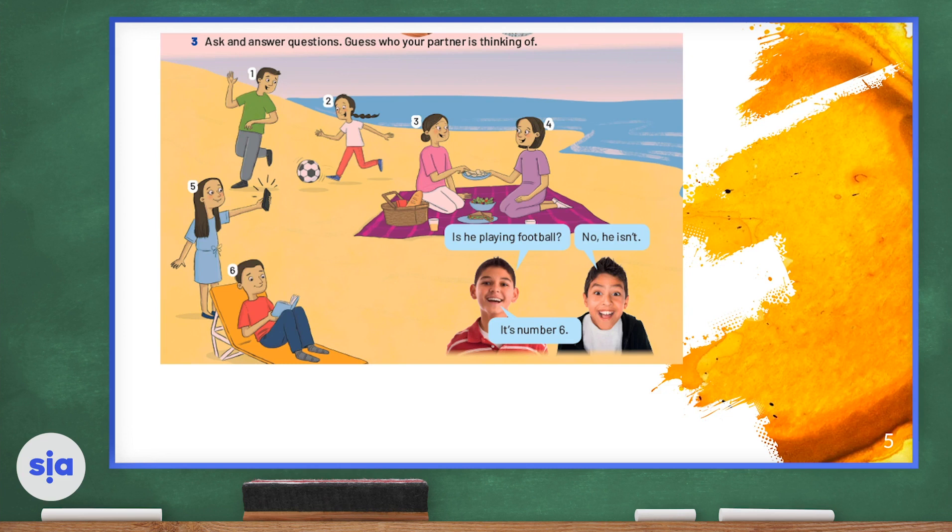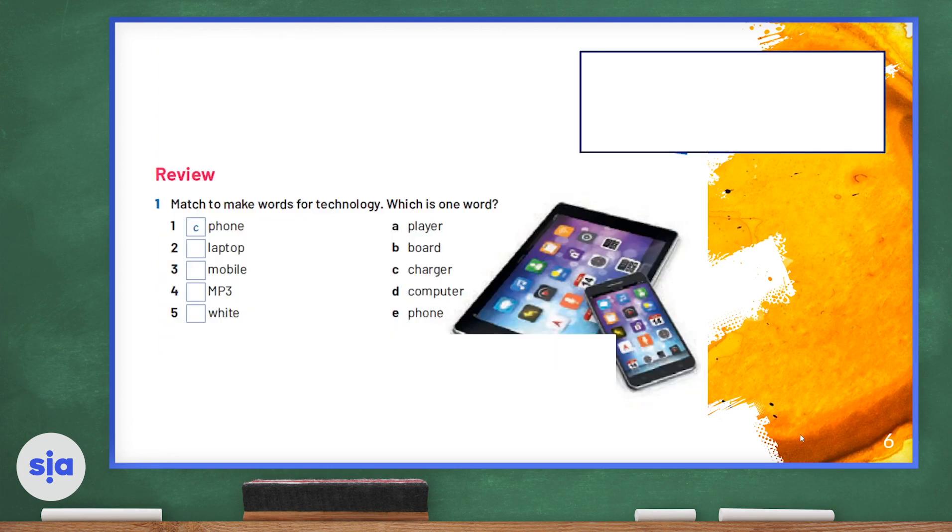So you can play this game with your partner. You can look at pictures three and four together and pay attention to the details. Those two women are sitting on some kind of mat and they have a picnic basket next to them. They're holding plates in their hands, so what are they doing? Are they having a picnic? Yes, they are.